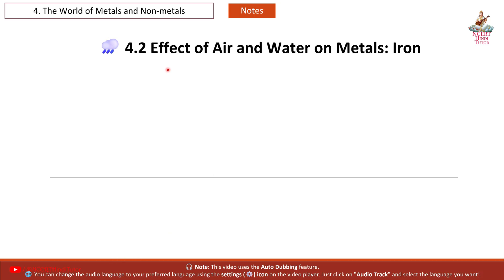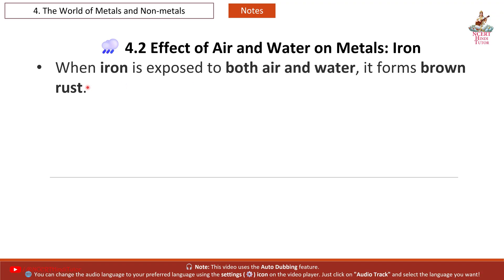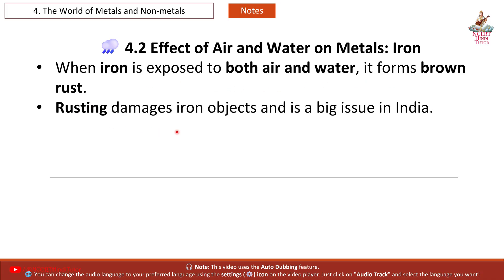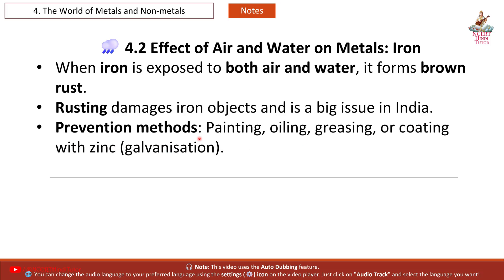4.2 Effect of Air and Water on Metals. When iron is exposed to both air and water, it forms brown rust. Rusting damages iron objects and is a big issue in India. Prevention methods include painting, oiling, greasing, or coating with zinc — which is called galvanization.